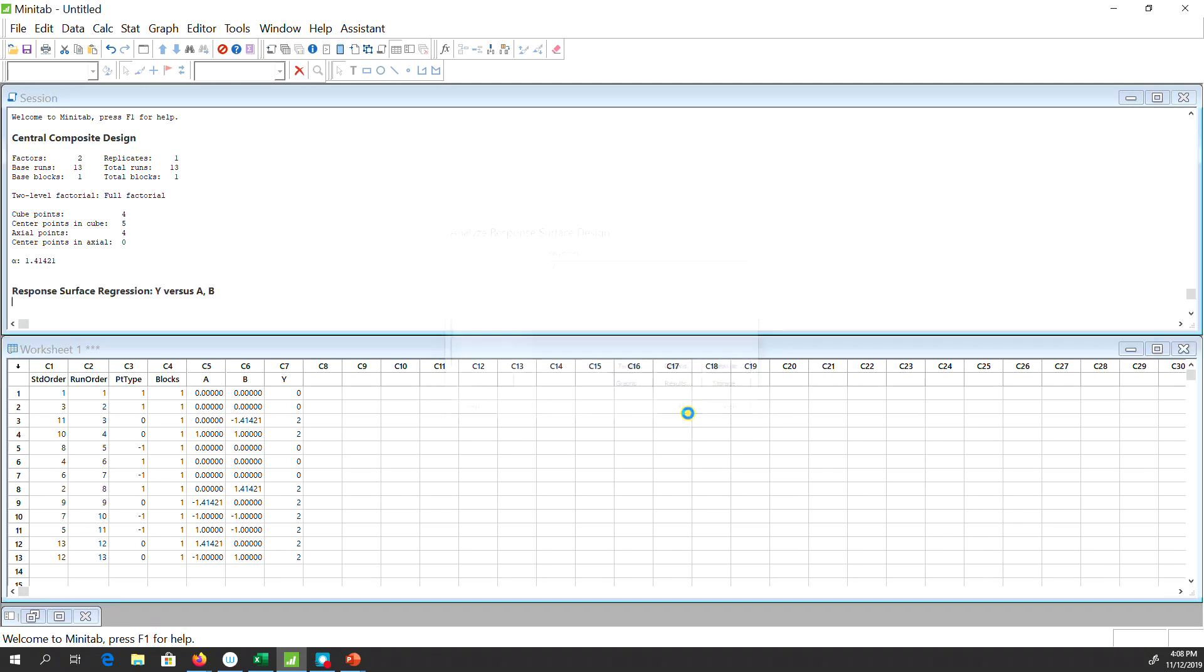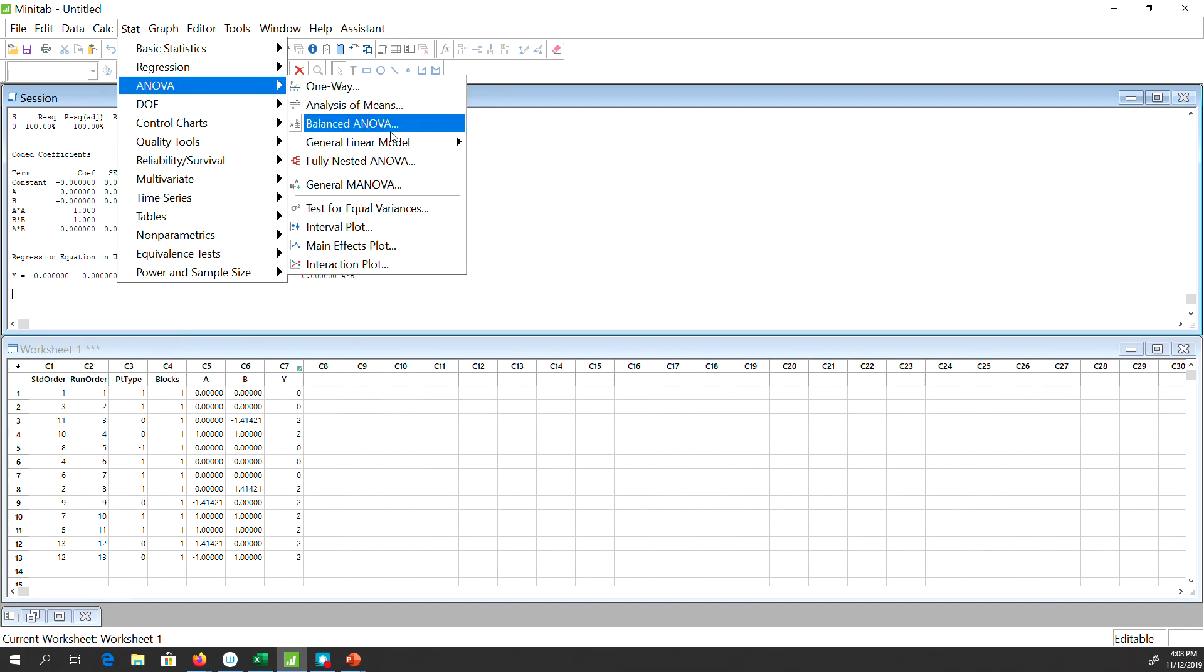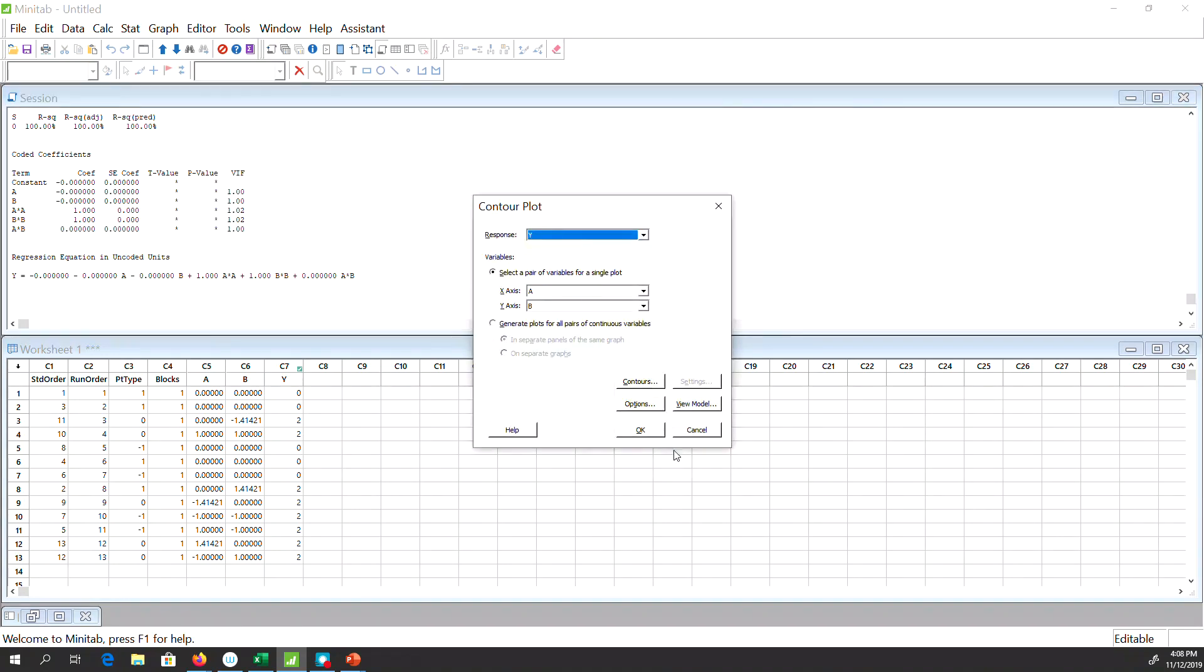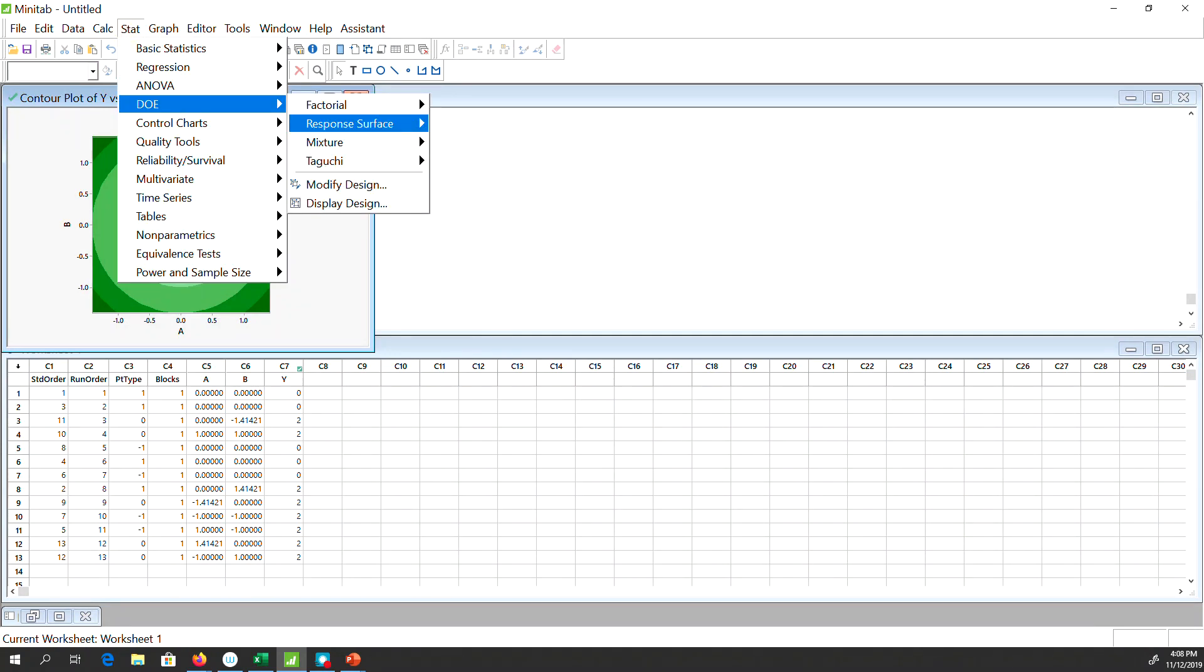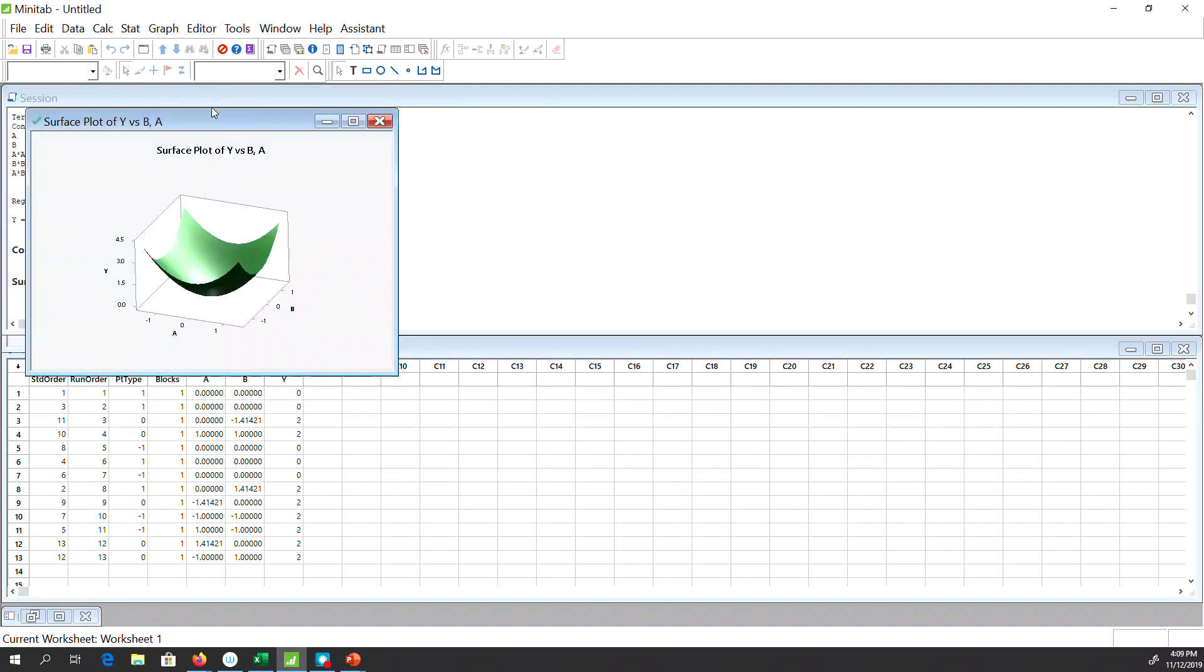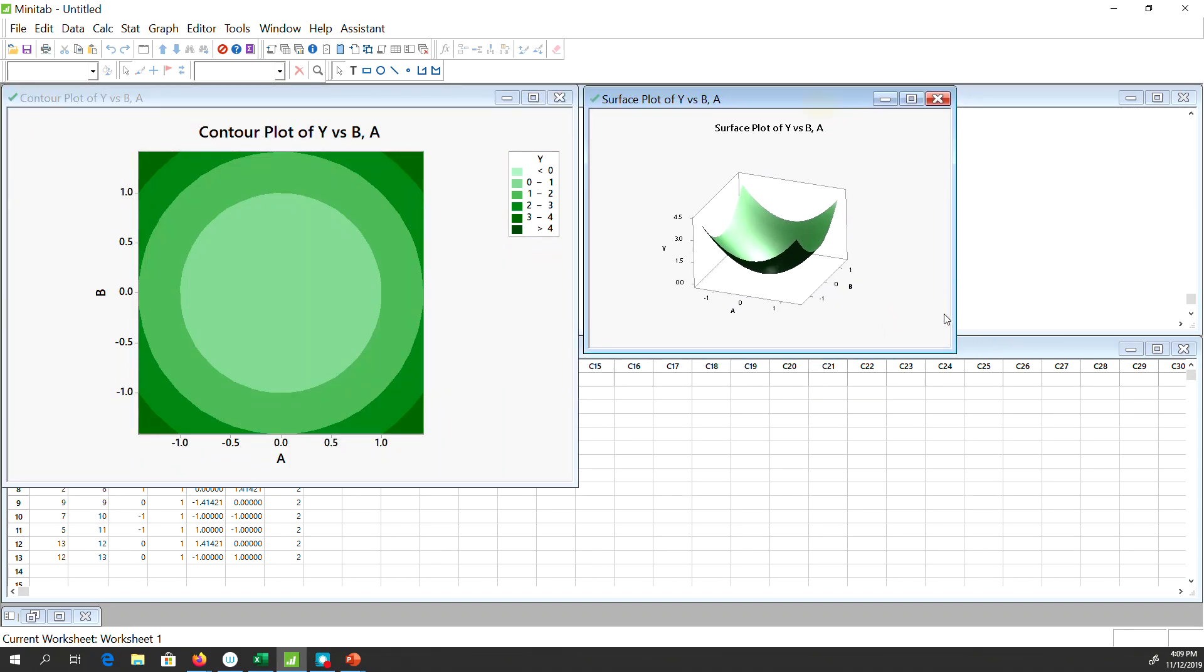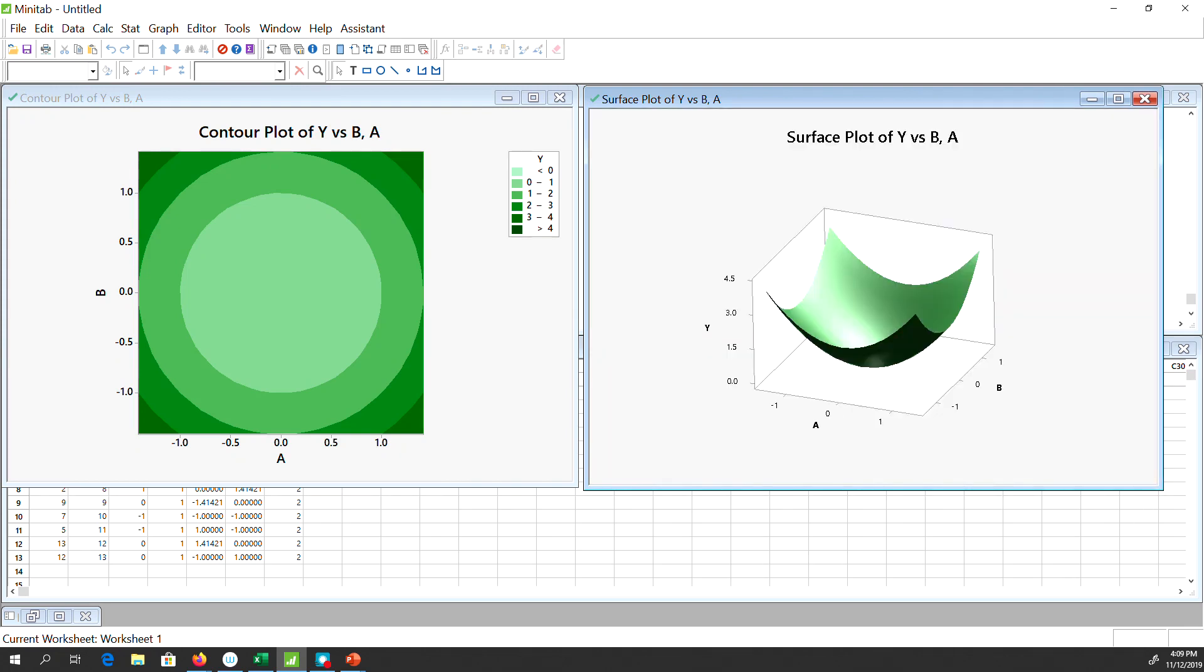Just hit okay, it will produce the result. Now go to Stat, DOE, Response Surface, this is the contour plot. Just simply hit okay. DOE, Response Surface, let's create the response surface. I'm not going to change anything, I'll keep everything default. You can create the response surface design, collect the data, and analyze it in Minitab.